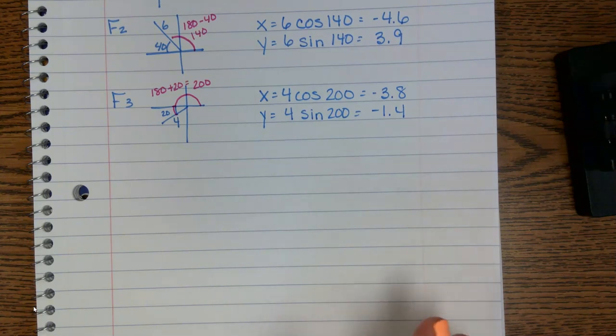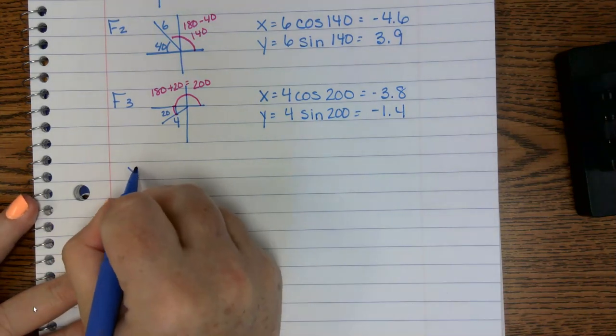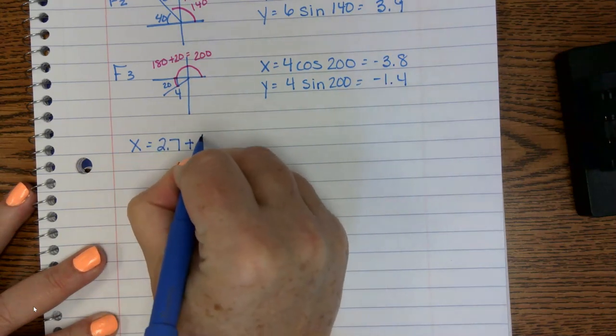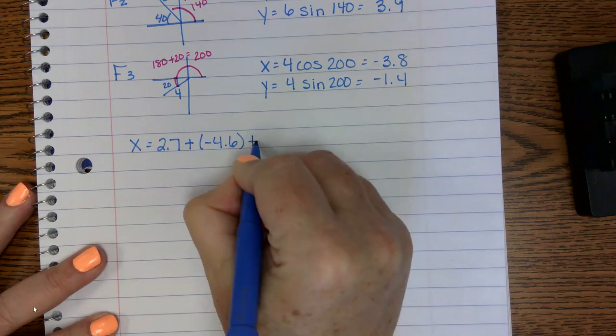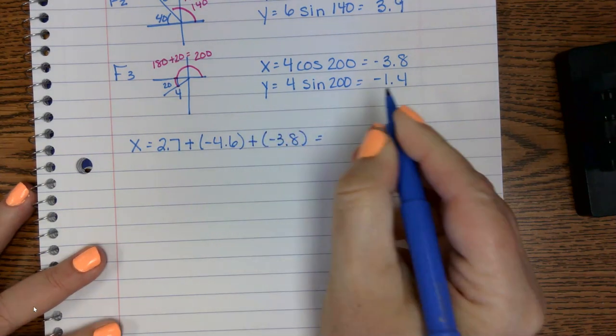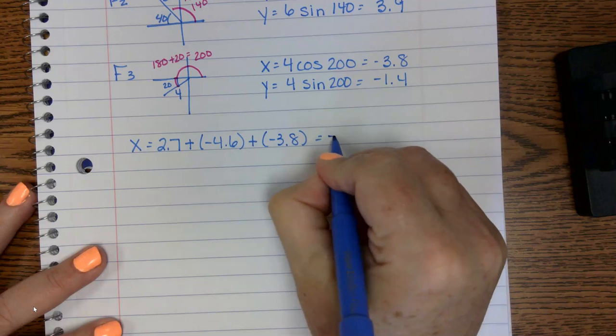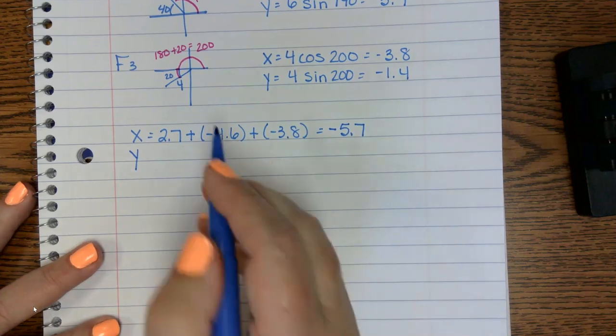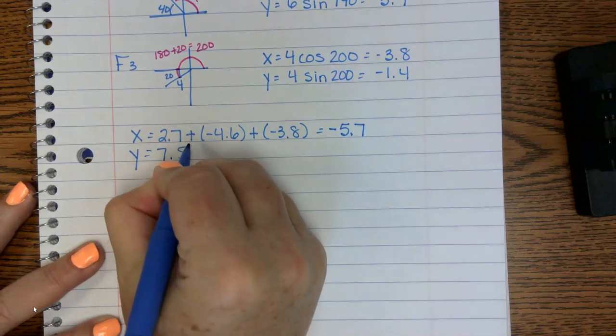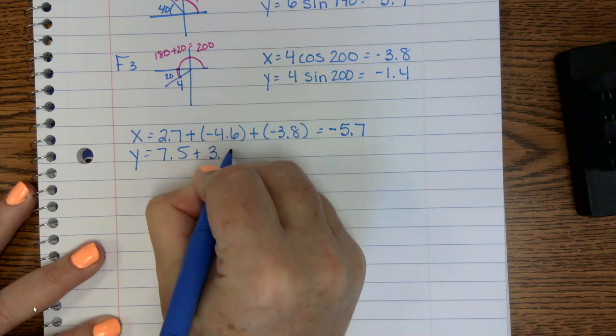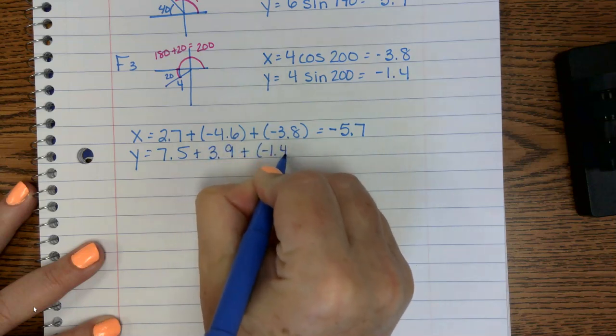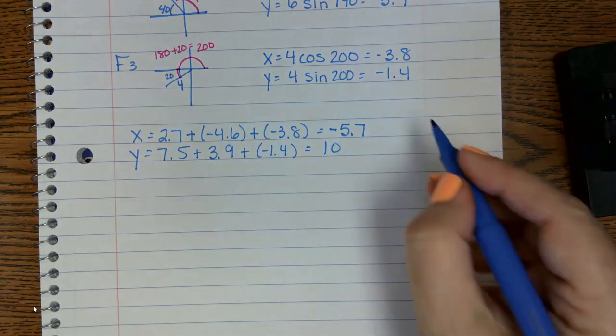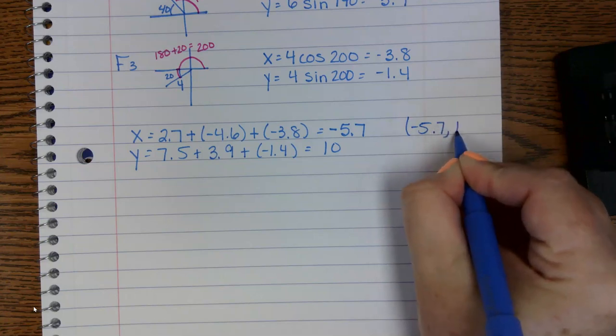So like we did before, just this time we have 3. We're going to add all of our x's. So 2.7 plus a negative 4.6 plus a negative 3.8. When I do add all that up, I get negative 5.7. We're going to repeat it for the y's. So 7.5, 3.9, and a negative 1.4. And that adds up to 10. So negative 5.7 and 10.